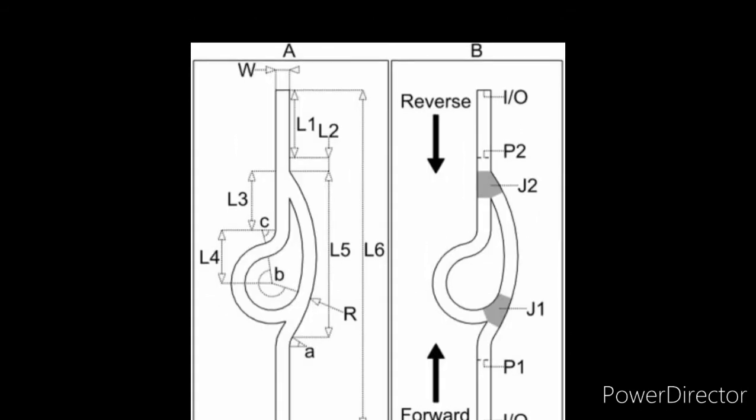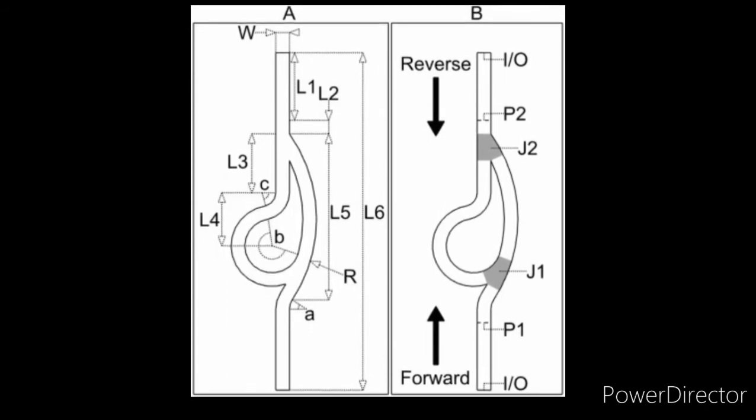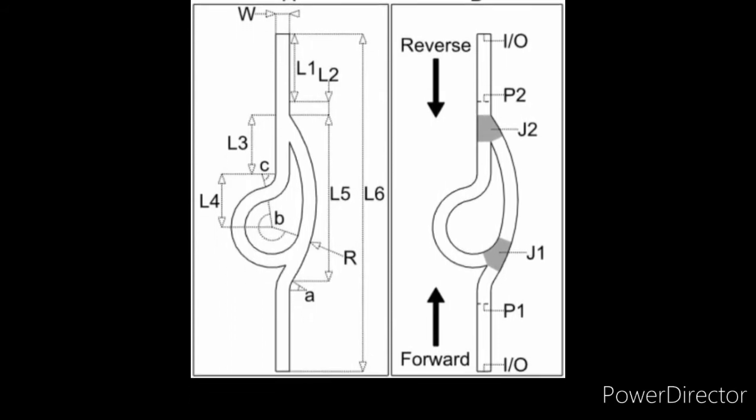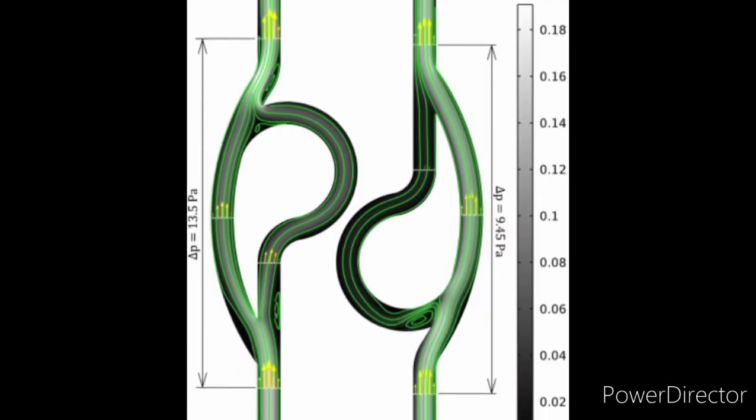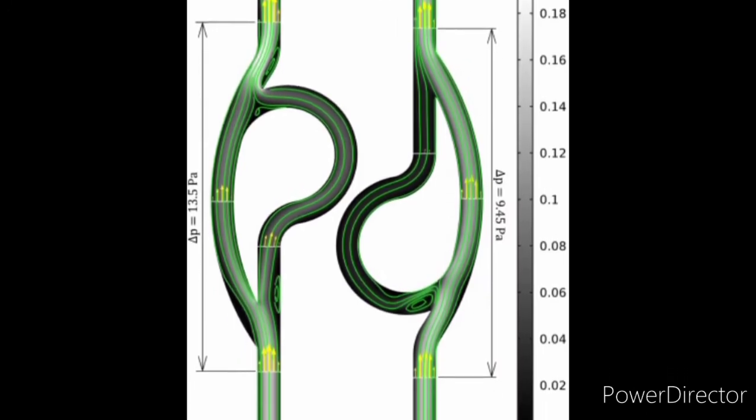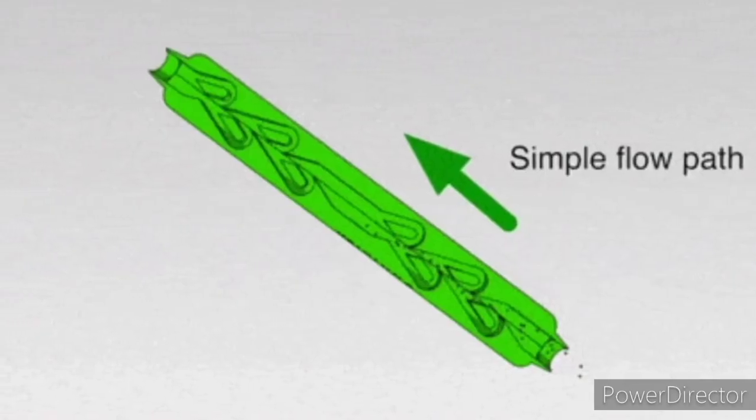One computational fluid dynamics simulation of Tesla valves with two and four segments showed that the flow resistance in the blocking or reverse direction was about 15 and 40 times greater respectively than the unimpeded or forward direction.